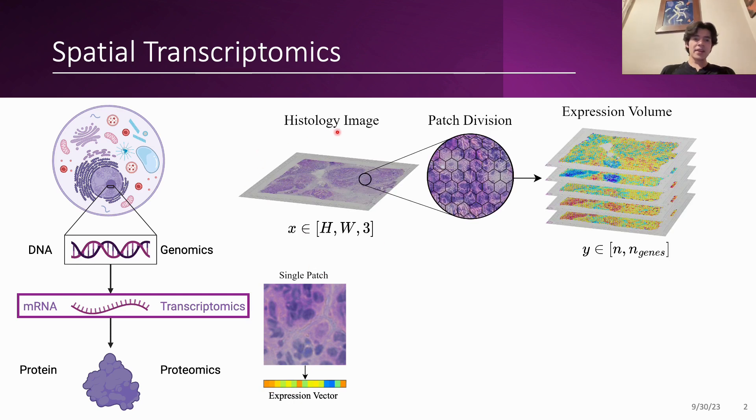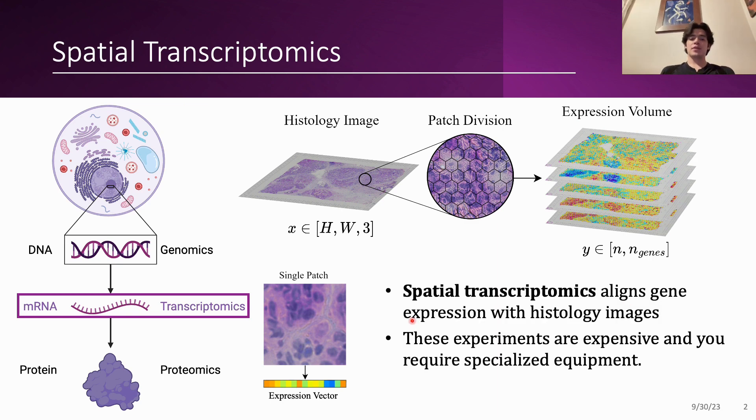So with that, let's say we have a histology image and we divide it into patches, then we could perform transcriptomics in each of these patches and we would obtain a series of expression maps. This is what we know as an expression volume and the whole technique would be known as spatial transcriptomics.